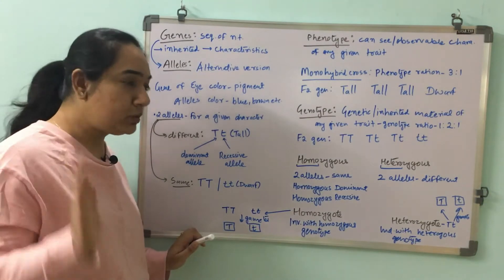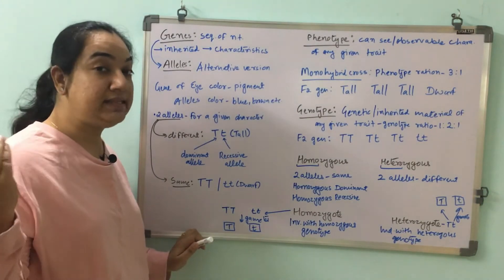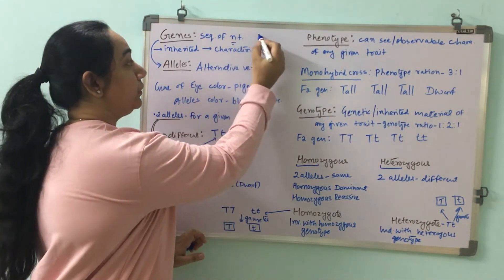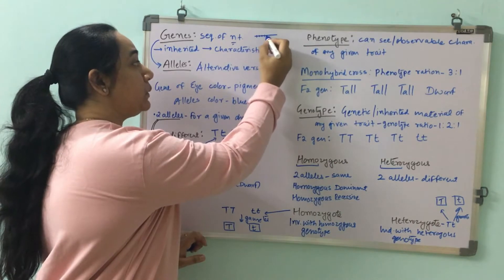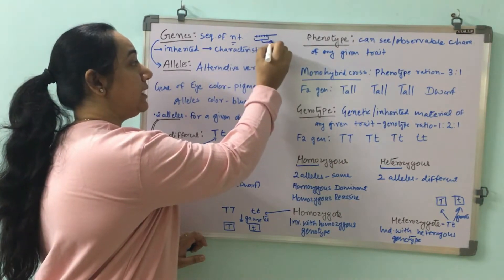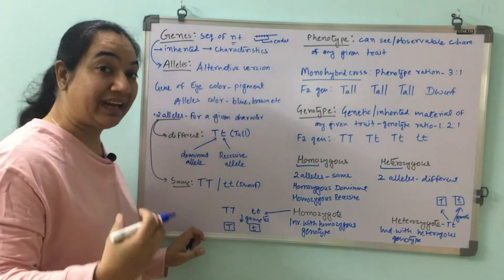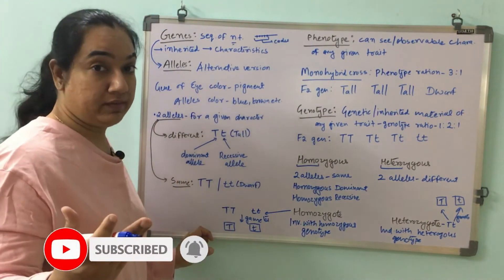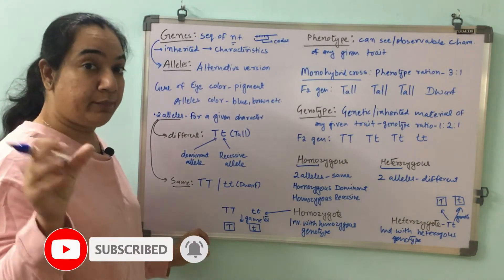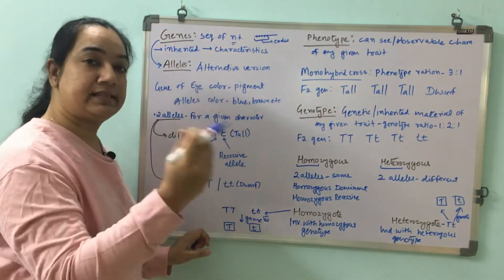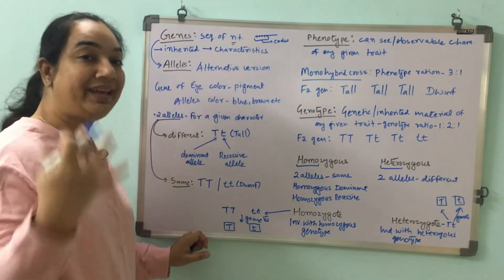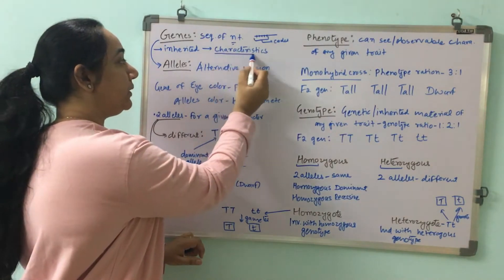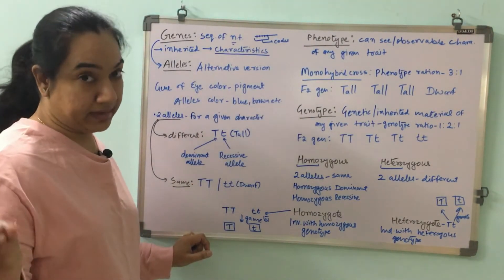Let's start with the most common terms: genes and alleles. Genes are specific sequences of nucleotides that code for a particular thing — they give you some kind of protein or code for a particular characteristic. That segment of nucleic acid in our DNA is the gene that we inherit from our parents. In simple terms, genes are the sequence of nucleotides that codes for a particular characteristic.